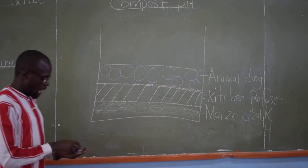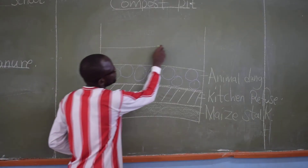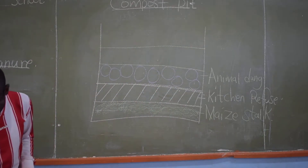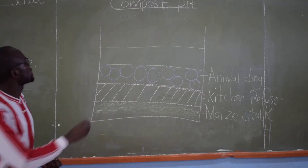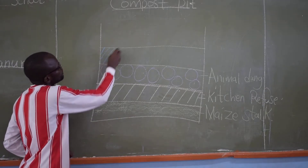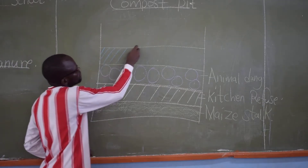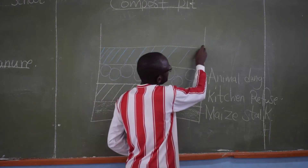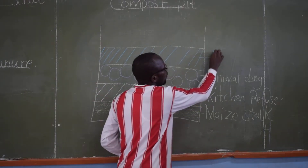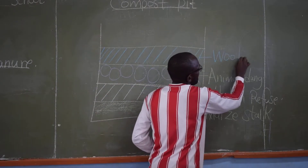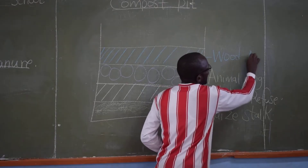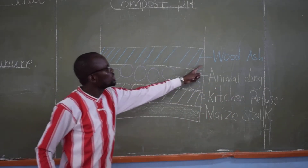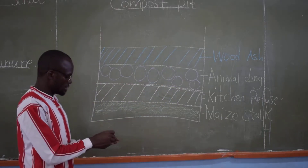Then our next material is wood ash. We can use a different color — blue — to represent wood ash in our diagram.